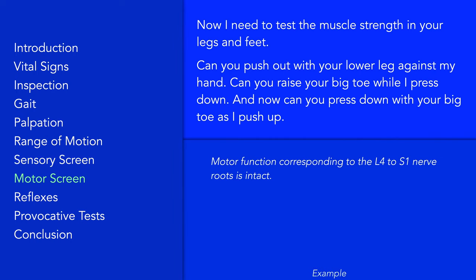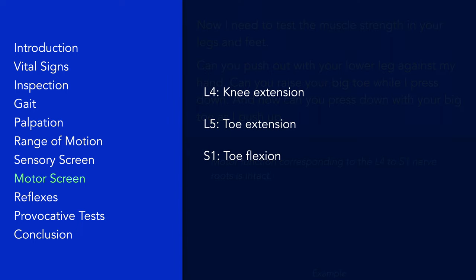In terms of motor function, instead of examining the strength of all the muscles of the lower legs, nerve root dysfunction can be screened for by assessing three active movements against resistance. Knee extension tests for L4 function, toe extension tests for L5, and toe flexion tests S1. If you detect any weakness, then assess motor function on other movements corresponding to the same nerve root, and remember, always compare both sides.